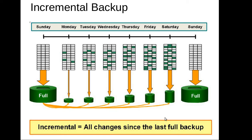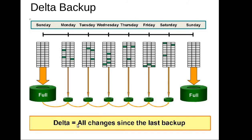Delta backup captures all changes since the last backup — not since the last full backup. If I took a full backup on Sunday and a delta on Monday, only Monday's changes are in that image. Tuesday's delta contains only Tuesday's changes. So if you have to restore to a certain point, you have to restore all delta images in sequence. The difference: incremental is all changes since the last full backup, whereas delta means only changes since the last backup.